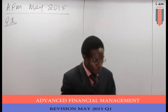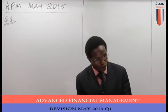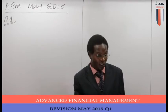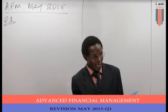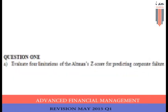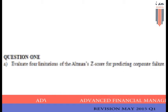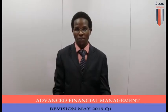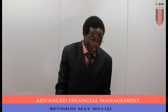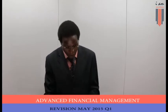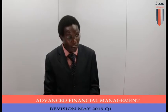In Advanced FM, there's a past paper that was done less than two seasons ago. We are talking about question one. Question one A: evaluate four limitations of the Altman's Z-score model for predicting corporate failure. Now, there are many limitations — not only just four. There are many other limitations of Altman's Z-score.